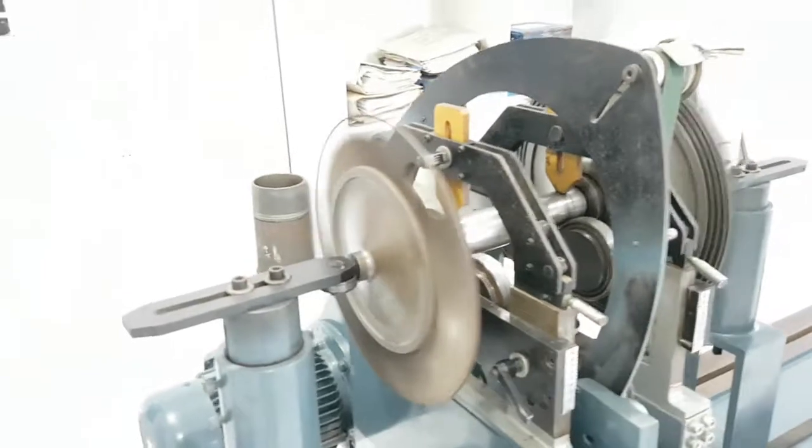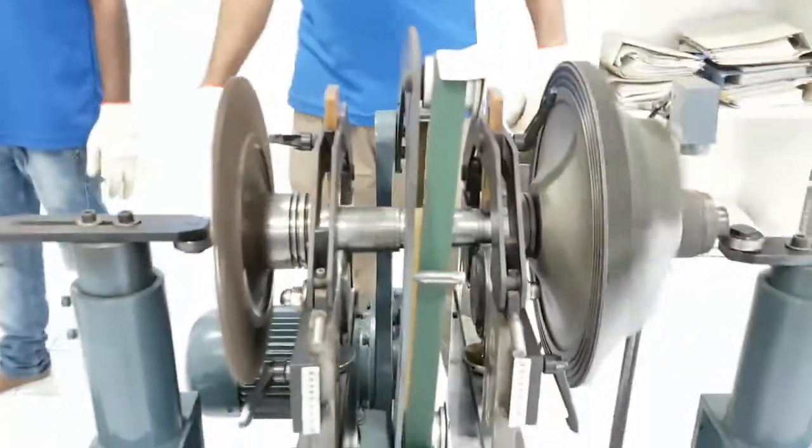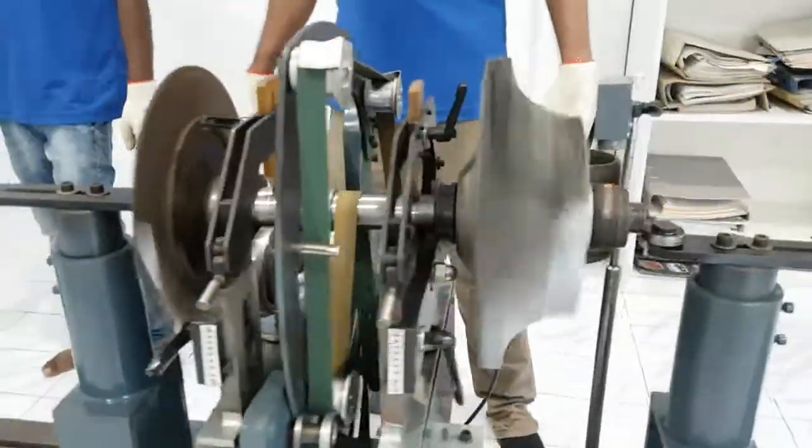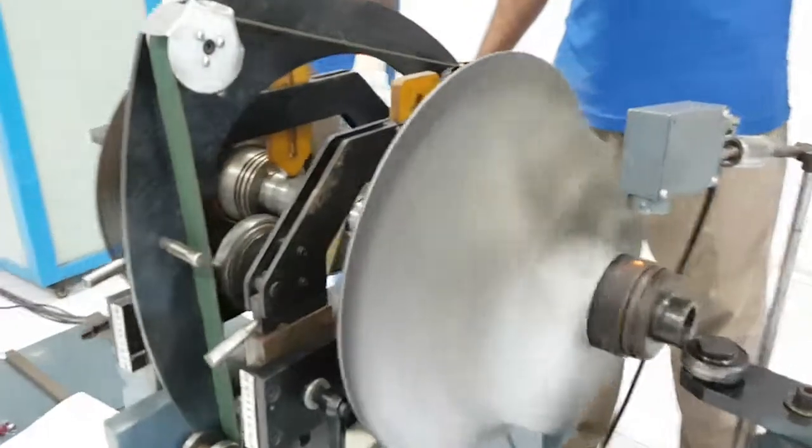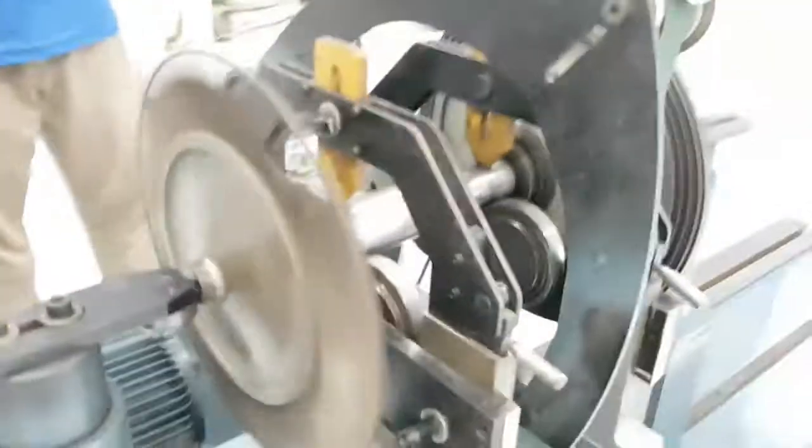Here you can see the balancing is being done. First they will do the compressor wheel and then they will do the turbine wheel.